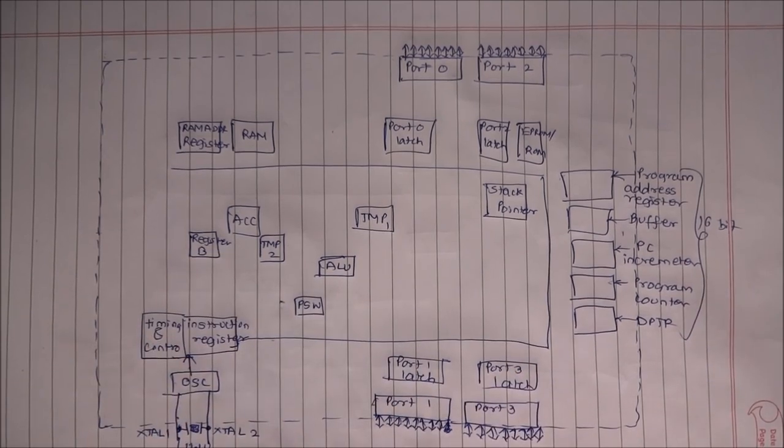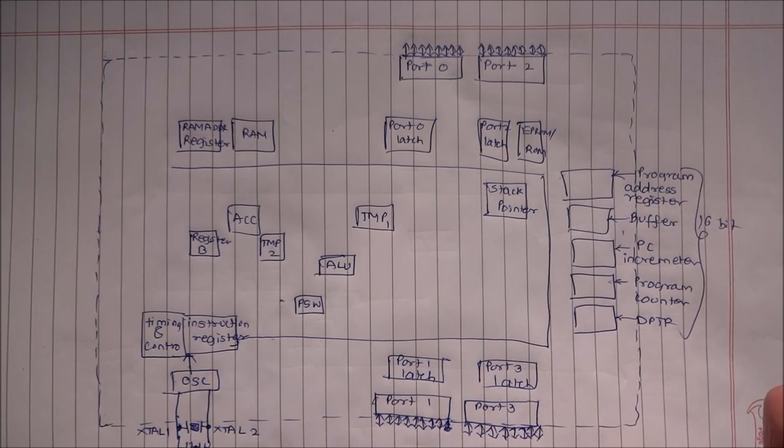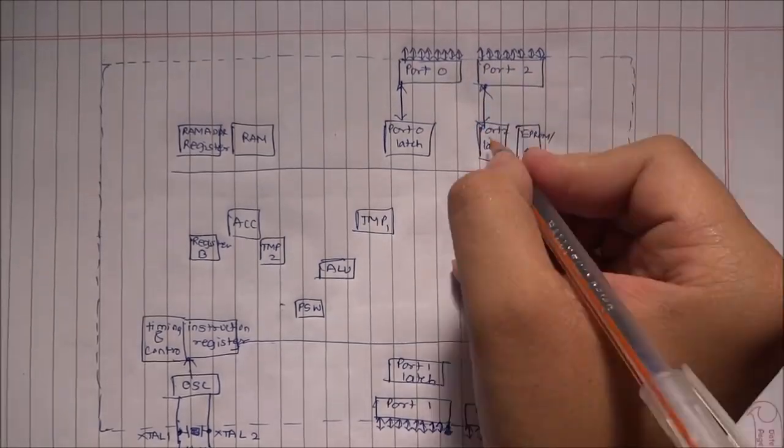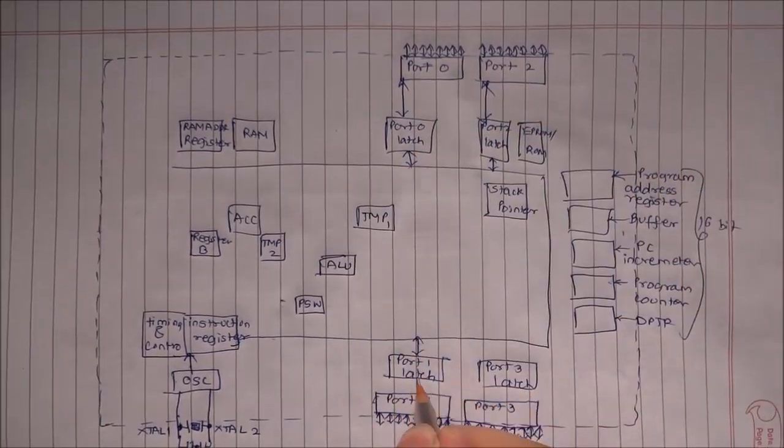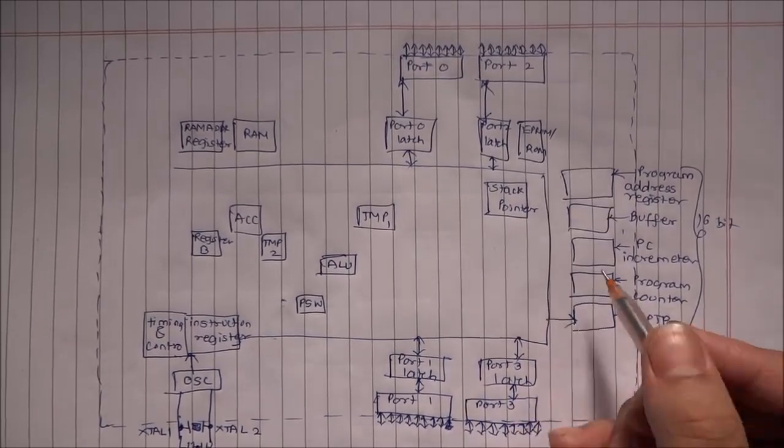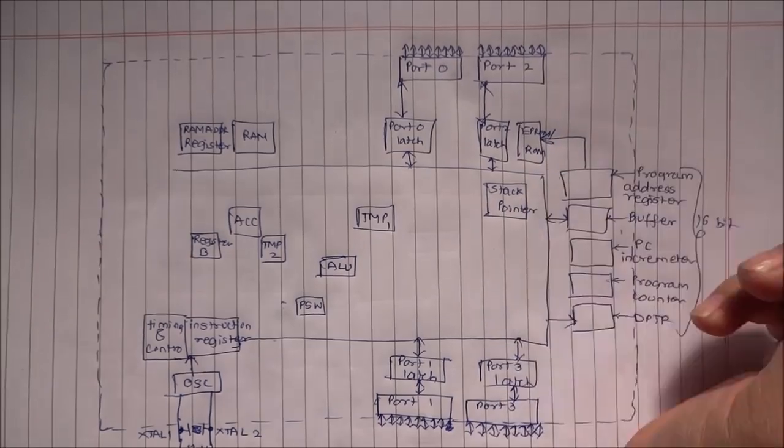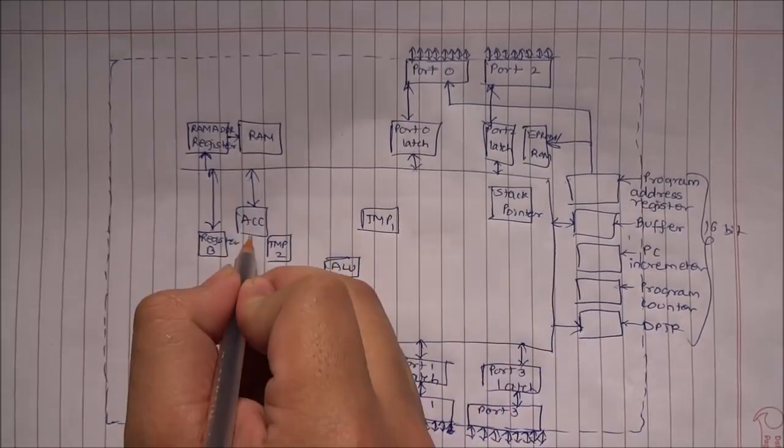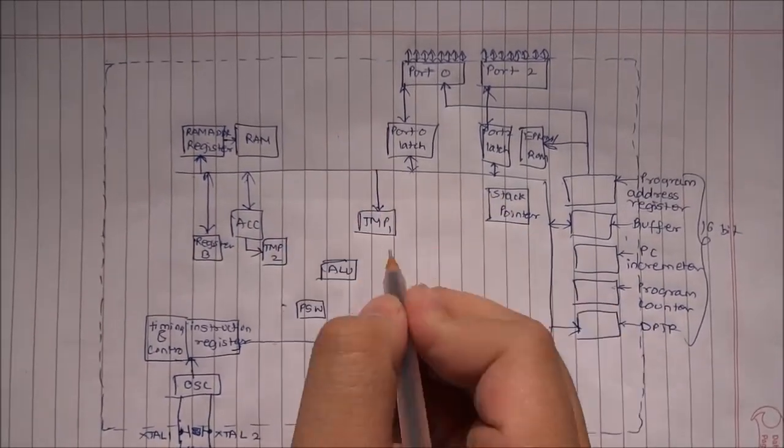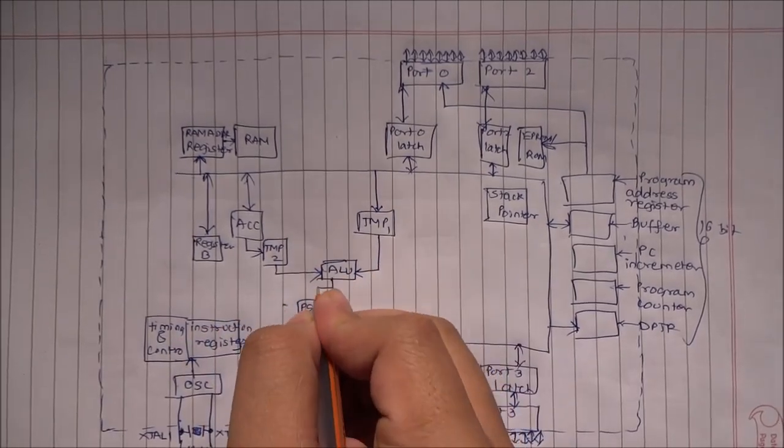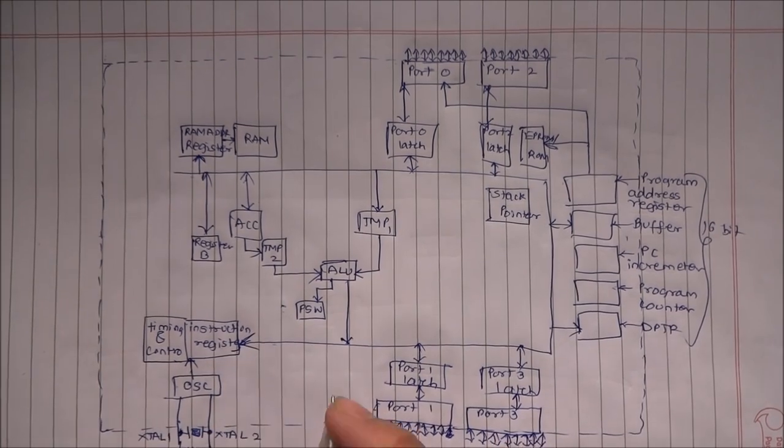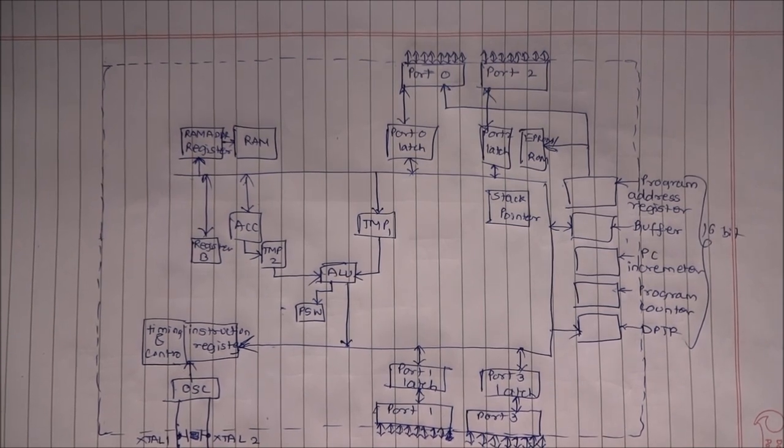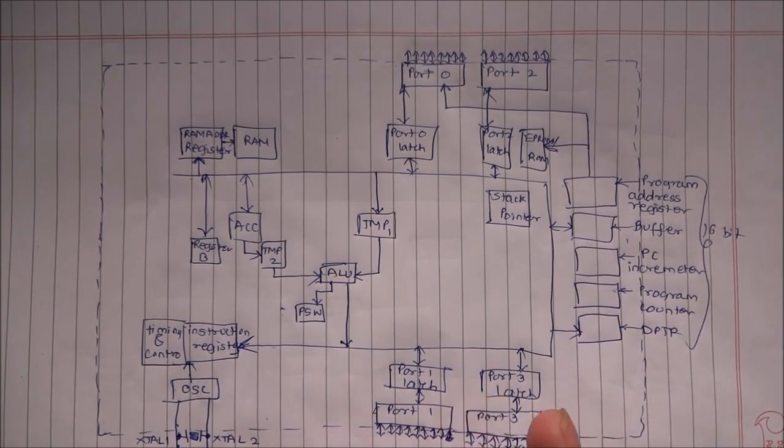All of the registers are completed. All of the blocks we have named them, and now let us make out the connections: port 1, port 2, port 3. Approximately I have made out the connections.